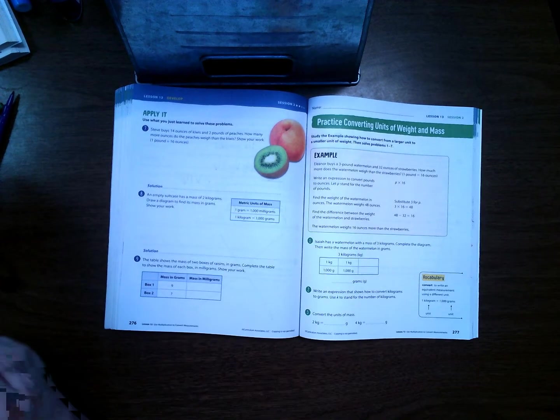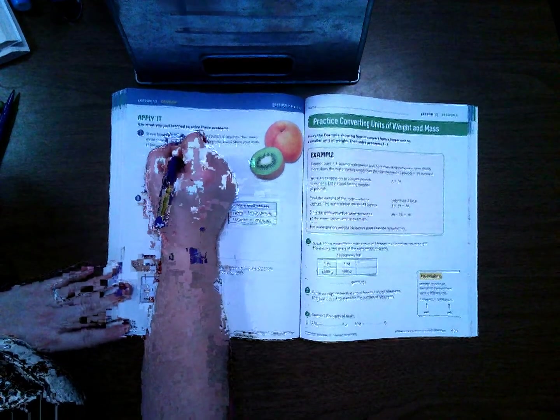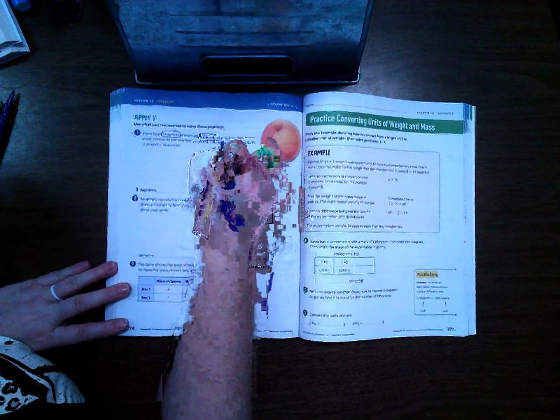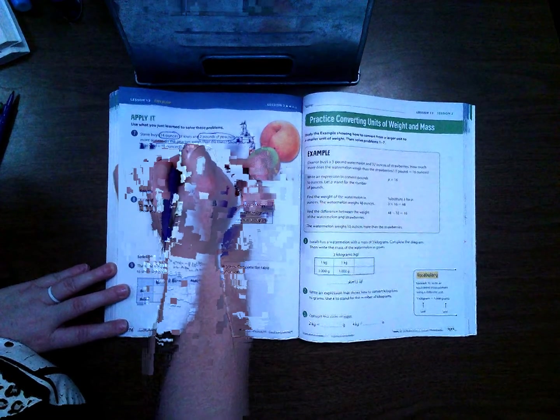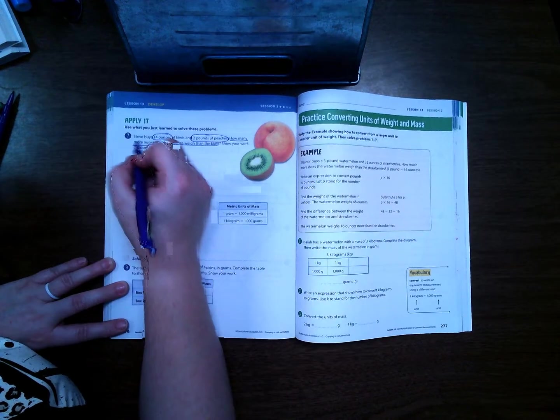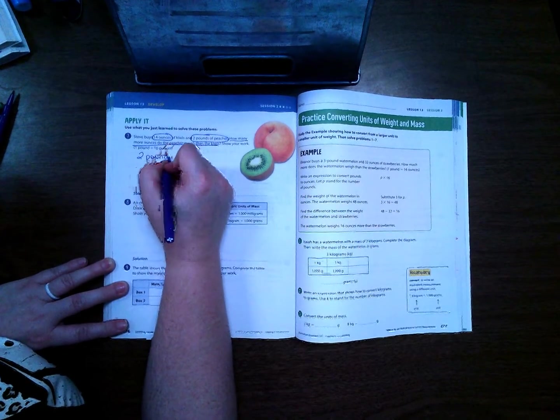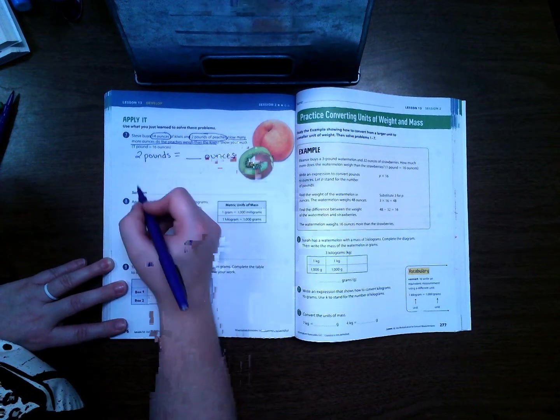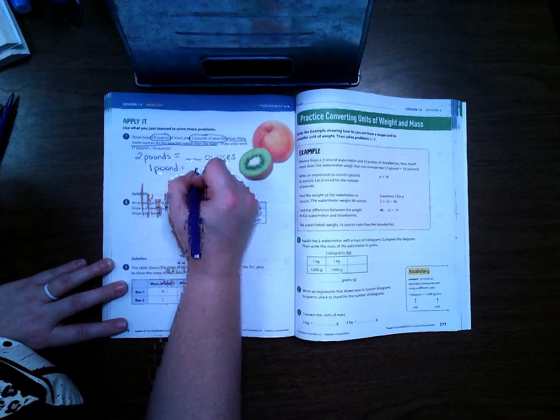On 276, Steve buys 14 ounces of kiwi and 2 pounds of peaches. How many more ounces do the peaches weigh than the kiwis? Well 2 pounds is going to have to be converted to ounces because I know that pounds is bigger than ounces, and I know that 1 pound equals 16 ounces.